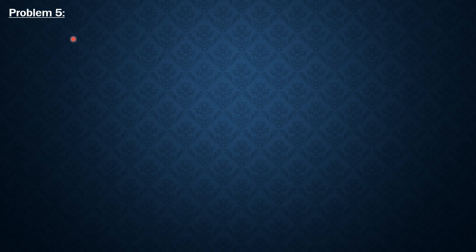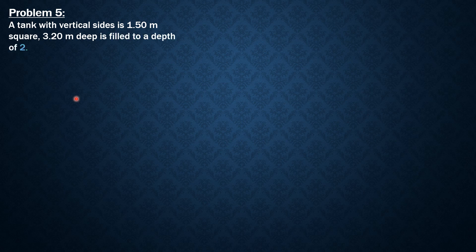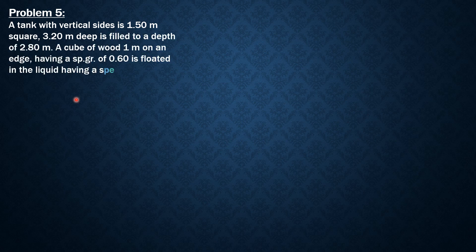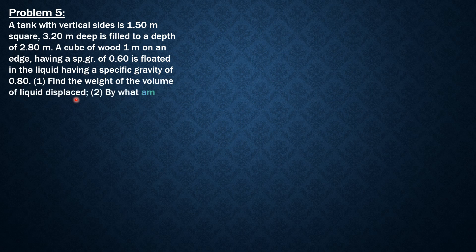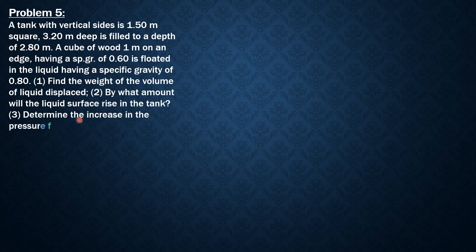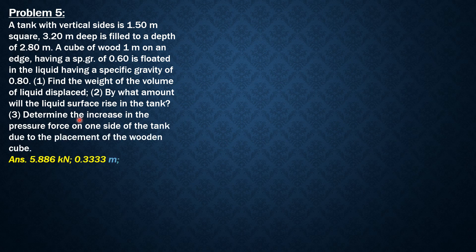Here is example 5 on buoyancy. A tank with vertical sides is 1.5 meters square, 3.2 meters deep, and is filled to a depth of 2.8 meters. A cube of wood 1 meter on an edge having a specific gravity of 0.6 is floated in a liquid having a specific gravity of 0.8. The first question: find the weight of the volume of liquid displaced. By what amount will the liquid surface rise in the tank? And number 3: determine the increase in the pressure force on one side of the tank due to the placement of the wooden cube.